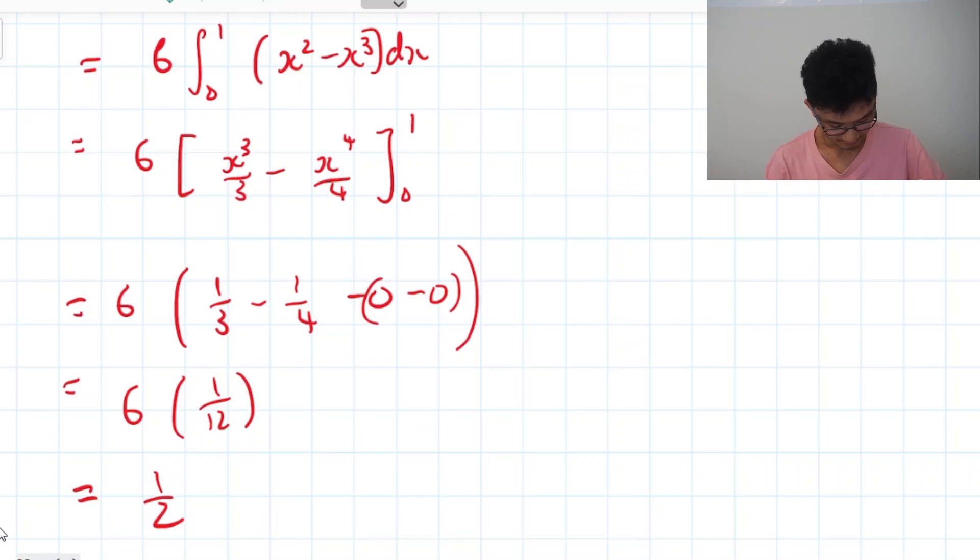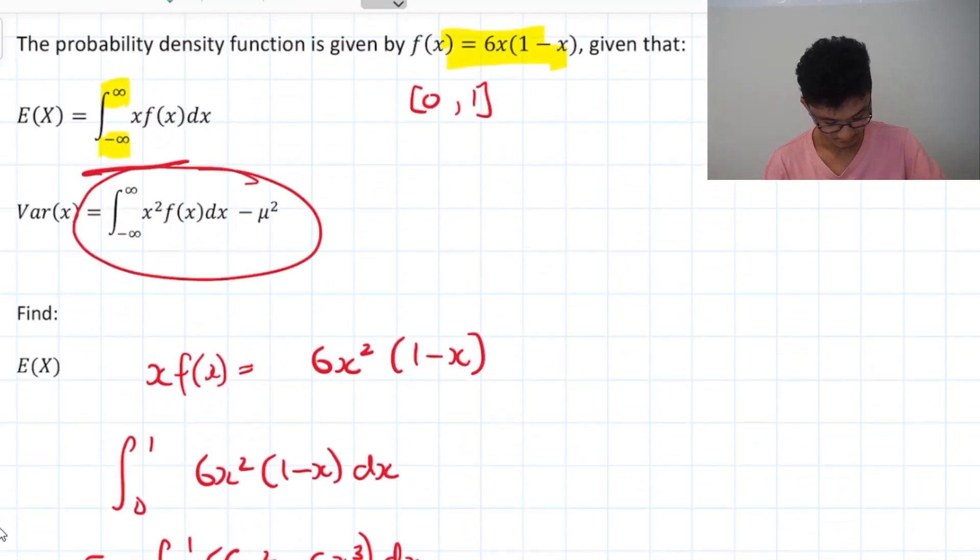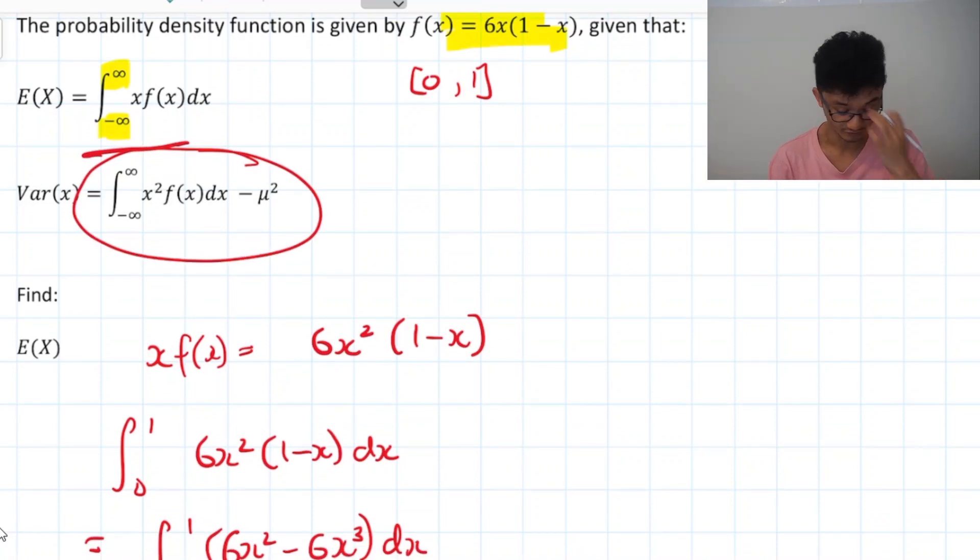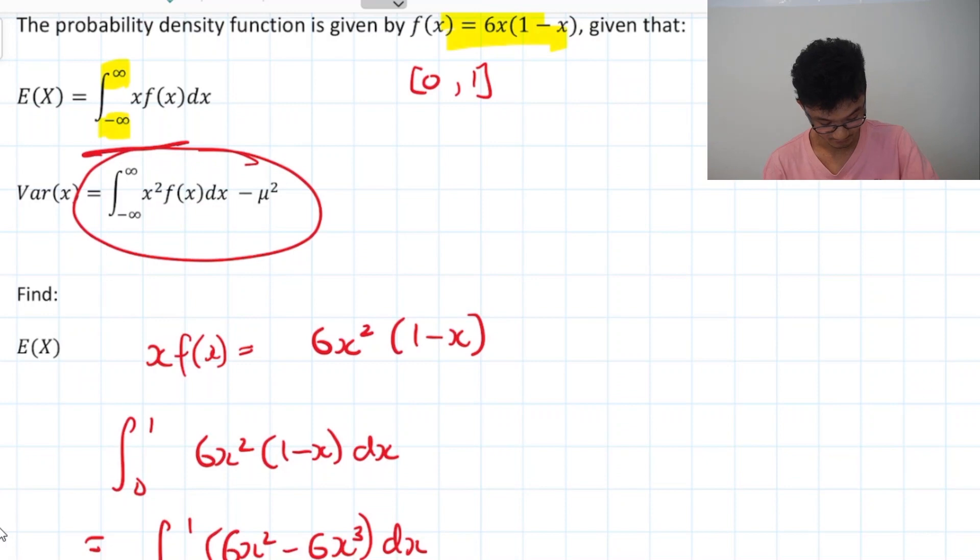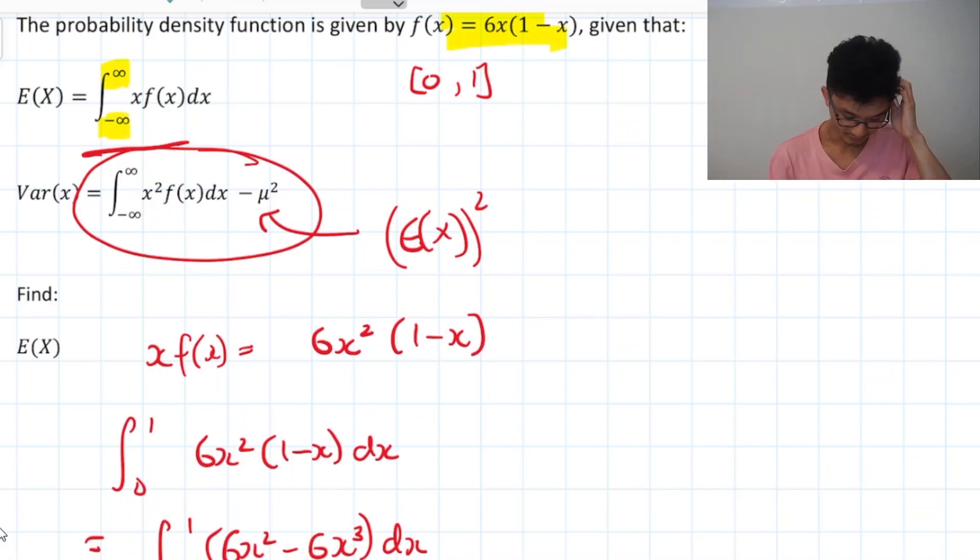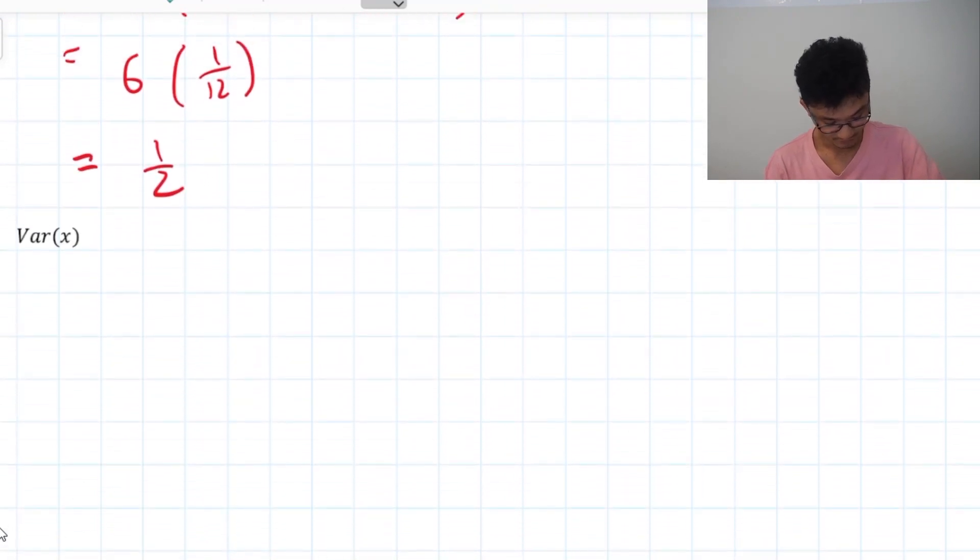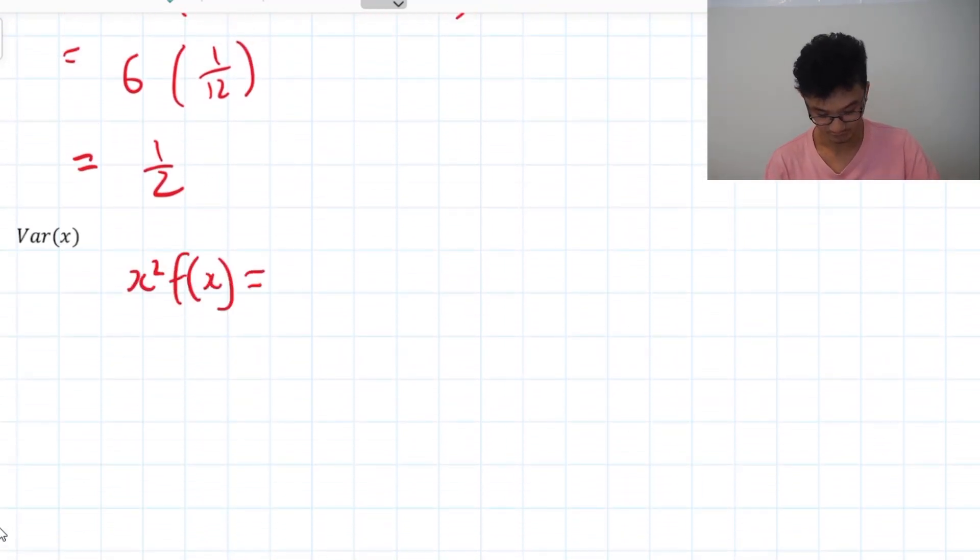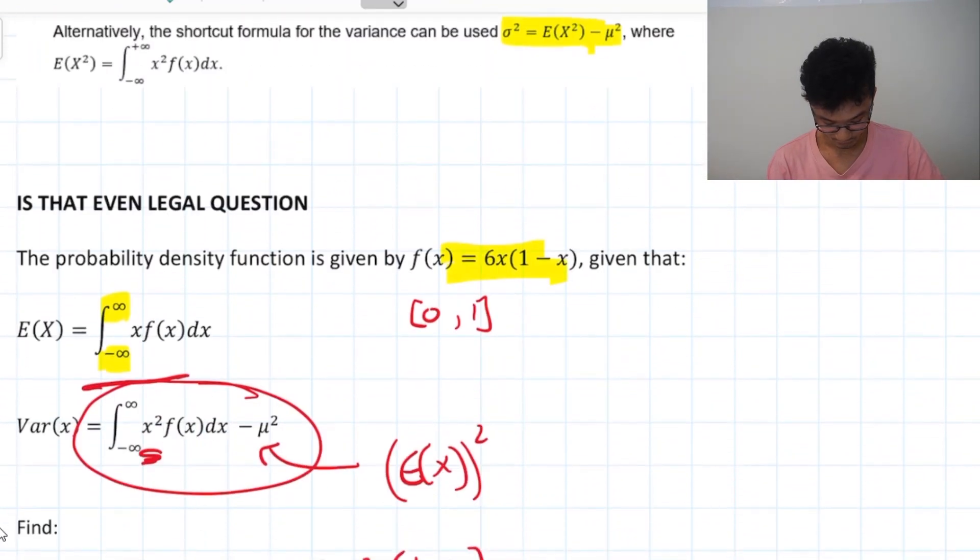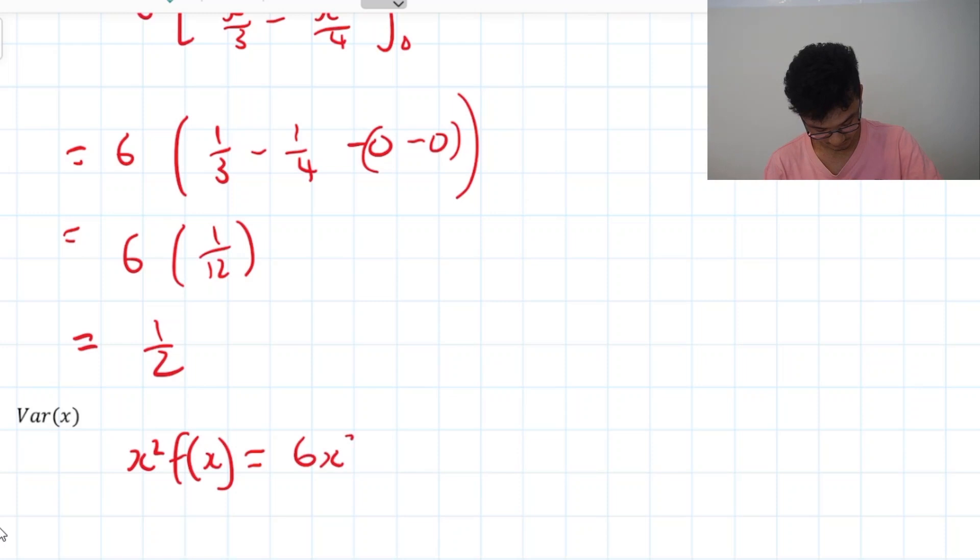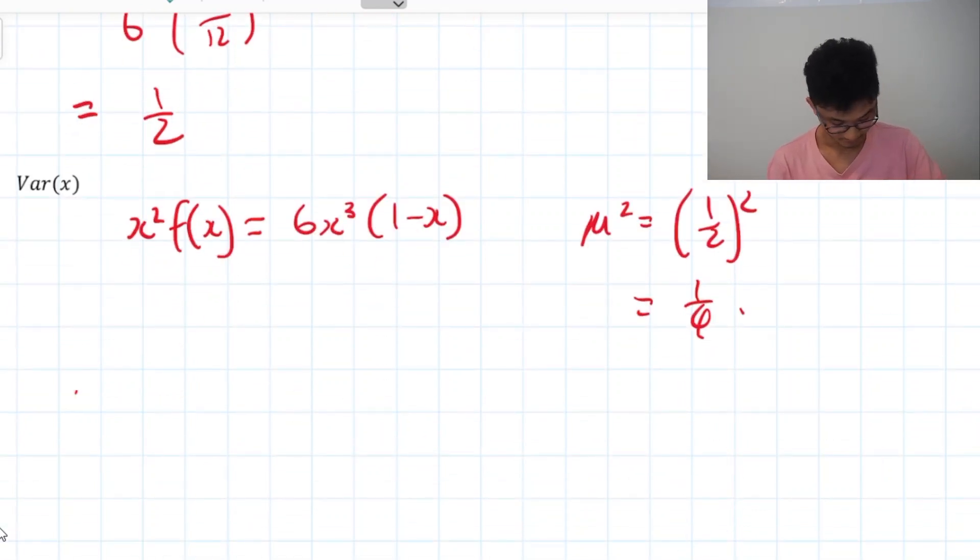Variance now we have a formula for that as well that's this guy over here. So that's just now note that the mean is μ here that's μ squared that's same as E(X) all squared and this is now just x² times f(x). So if I write that over here x²f(x) would equal to that's just 6x³(1-x) and μ squared would just be 1 over 2 all squared so it's just a quarter. And let's just put that all in so we've got zero to one x²f(x) minus μ squared.